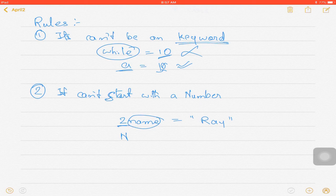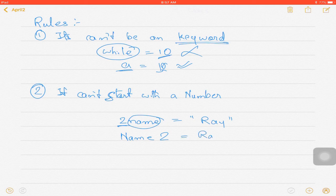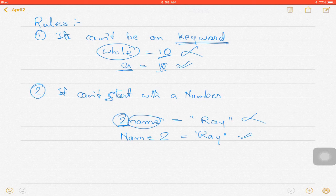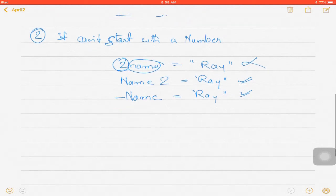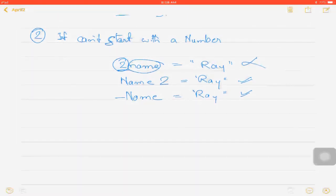If I write 'name2 is equal to Ray,' it is valid, but this one, because it starts with a number, is not valid. Yes, it can start with an underscore. So if I write something of this sort, it will work.